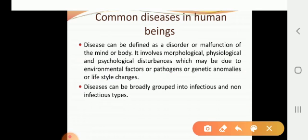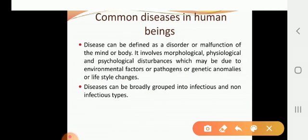Pathogens enter our body and boost our immunity to fight against and eliminate them. Genetic anomalies include Down syndrome, Klinefelter syndrome, and Cri-du-chat (Cat Cry) syndrome — we will learn those in the genetics and heredity lesson. Lifestyle changes also cause disease; nowadays our lifestyle is entirely different from that of our grandparents, and that leads to some discomfort. These are all causes of diseases.